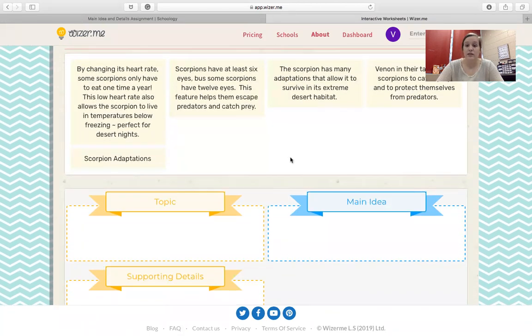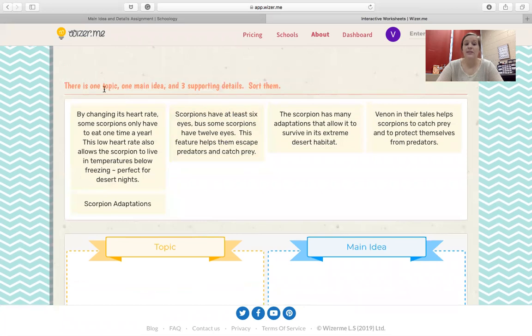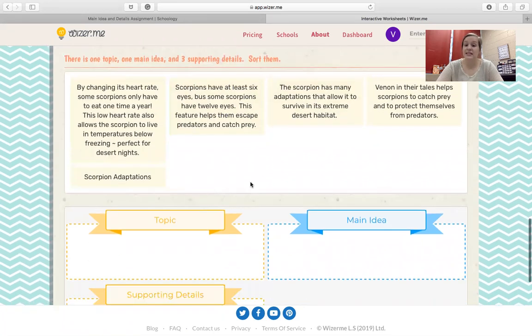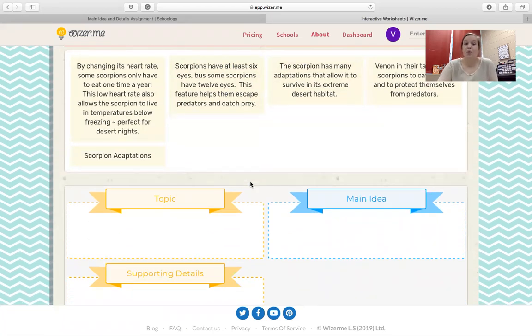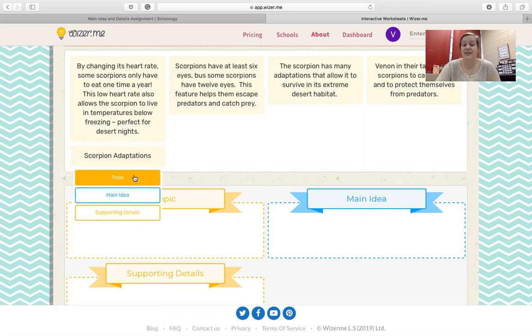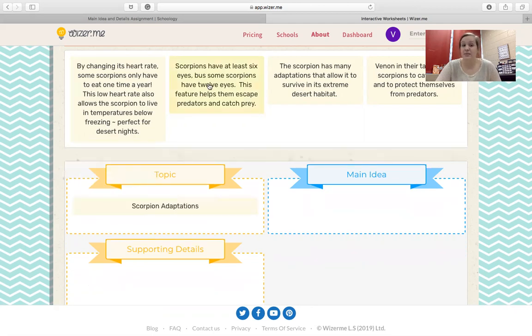And lastly, you have a sort. You have one main idea, one topic, and three supporting details and you need to sort them. Well, the topic is only one to two words, so you can kind of already tell that Scorpion adaptations is going to be the topic. And the way you sort them is just click down and click what they are.